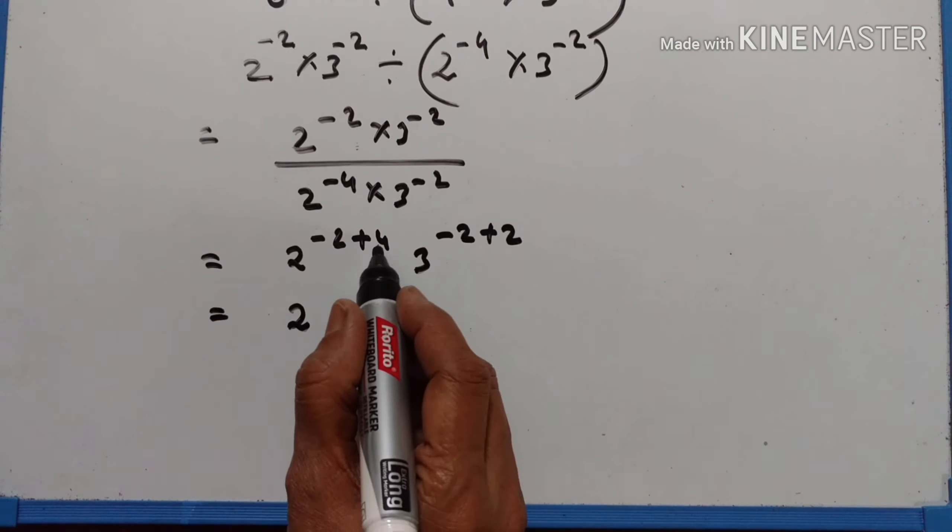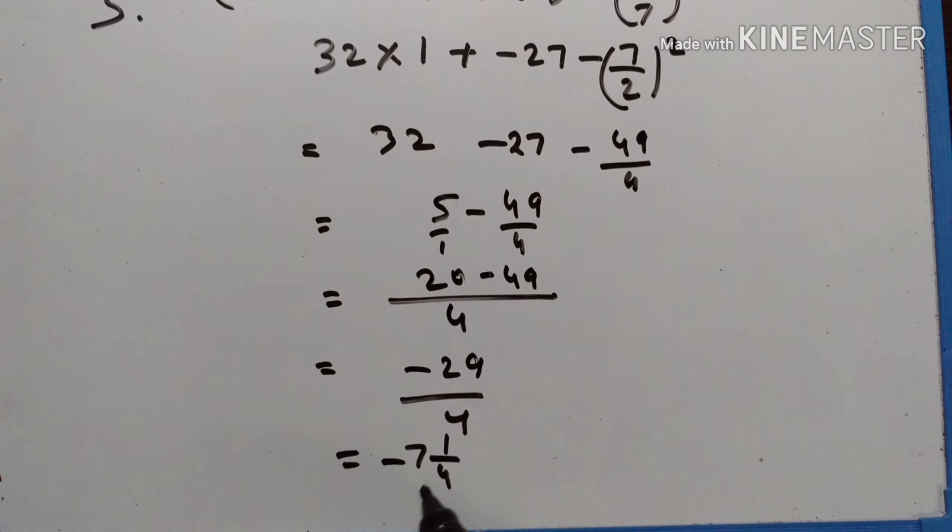2 raised to the power of 5 is equal to 32. Into 15 raised to the power of 0 is equal to 1. Plus minus 3 multiplied 3 times: minus 3 cubed is equal to minus 27. Minus: this is 7 upon 2, squared. 7 squared is equal to 49, 2 squared is equal to 4. So: 32 minus 27 minus 49 upon 4. 32 minus 27 is equal to 5, minus 49 upon 4. Taking LCM as 4: 20 minus 49 upon 4, giving minus 29 upon 4, which is equal to minus 7 and 1 upon 4.